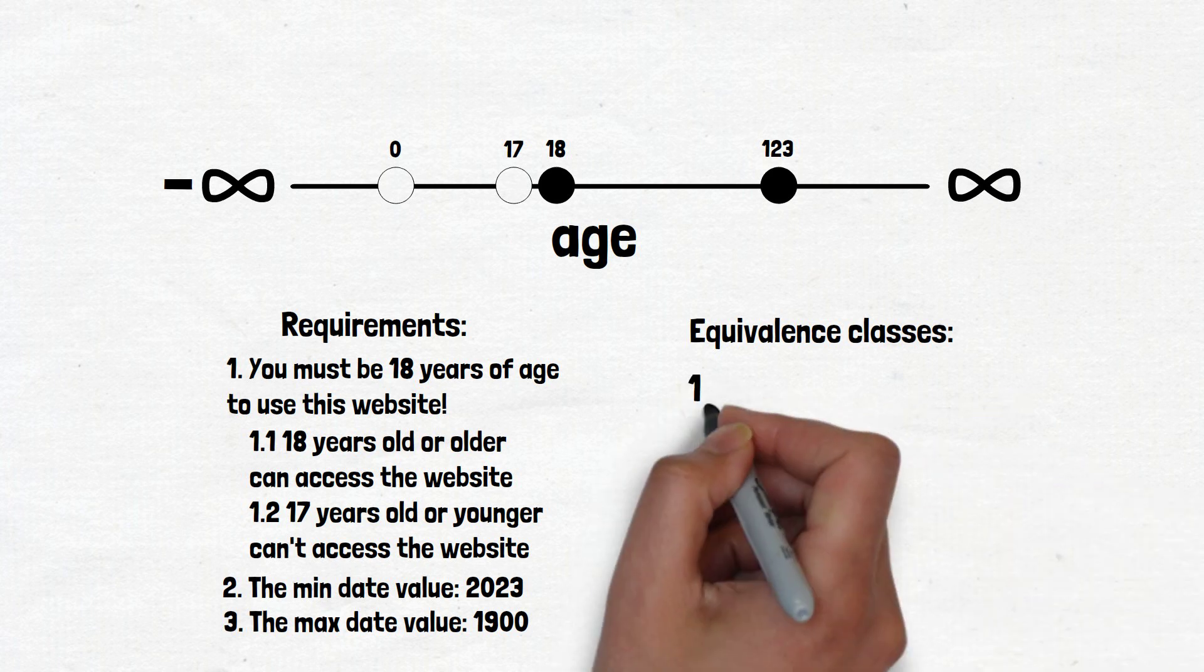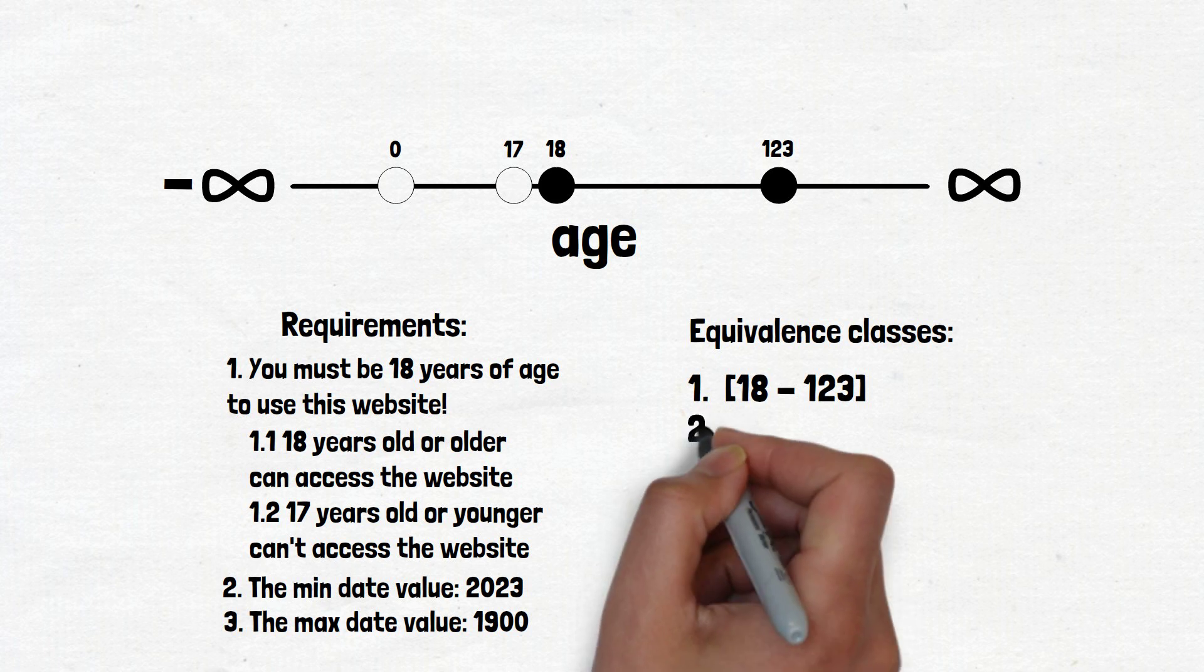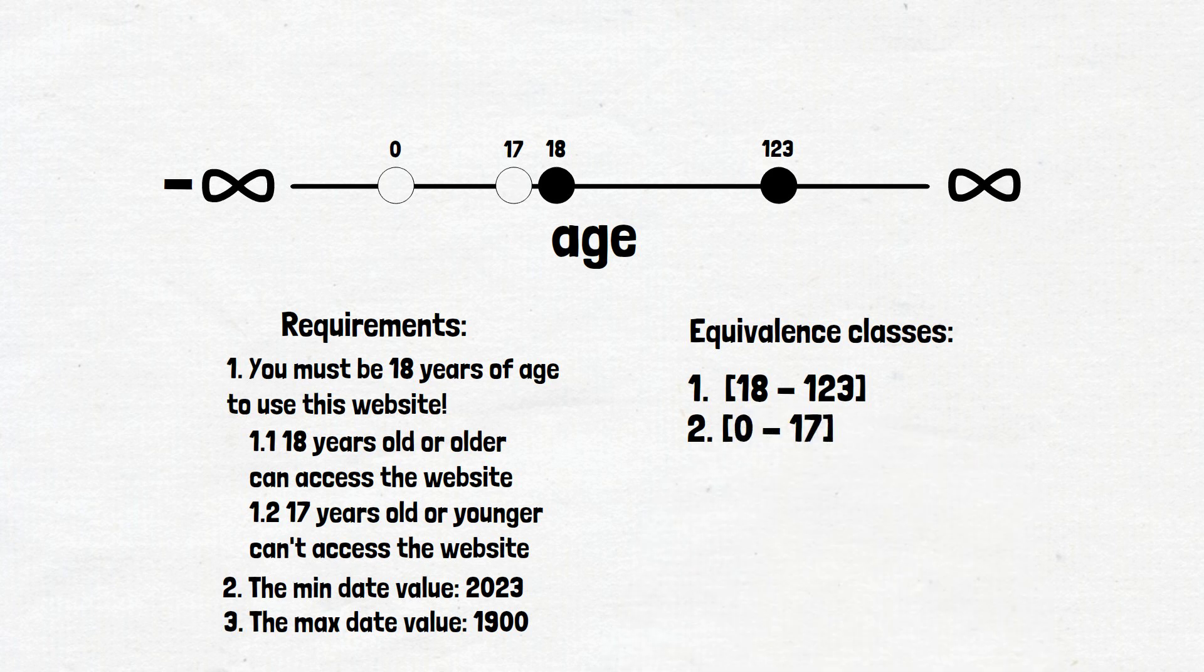And now we need to update the equivalence classes. The first one is from 18 years old to 123 years old. People who are allowed to use the website. And the second class is from 0 years old to 17 years old. People who are not allowed to use the website.